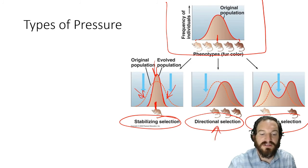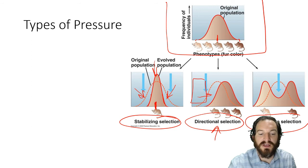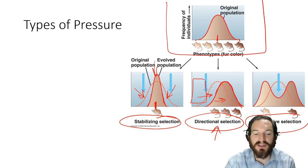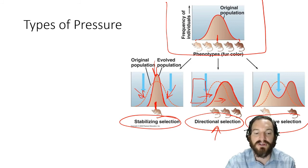In directional selection, there's pressure on one type of phenotype. Maybe the light-colored mice are preyed upon, so they become less frequent — the frequency shifts in one direction. The curve skews so the darker colored mice become more populous in the overall population.